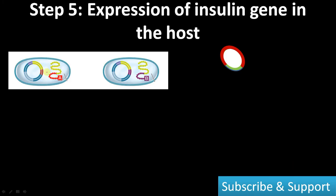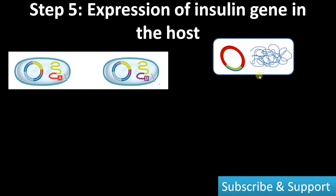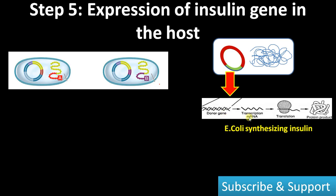Step five: expression of the insulin gene in the host. This protein is expressed inside the host as a fusion protein. You can see the beta-galactosidase gene fused to the insulin A gene, producing a beta-galactosidase–insulin A chain fusion protein. Similarly, the second culture expresses a beta-galactosidase–insulin B chain fusion protein. The recombinant vector inside the host undergoes transcription followed by translation, forming the protein product. Since the beta-galactosidase gene is present, transcription and translation can be induced by adding lactose — the substrate of beta-galactosidase — ensuring efficient translation.